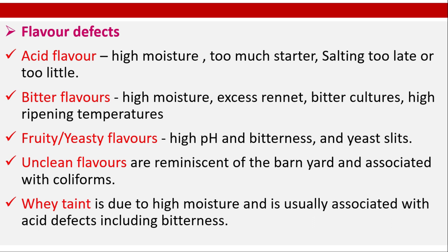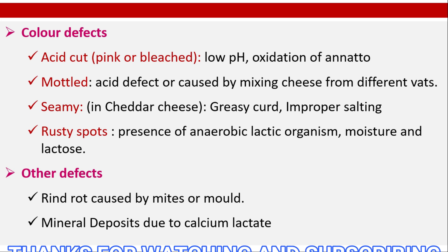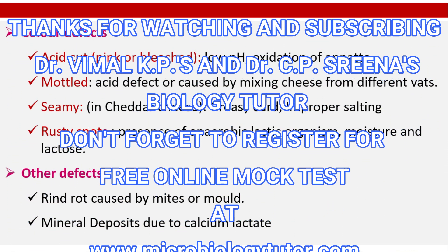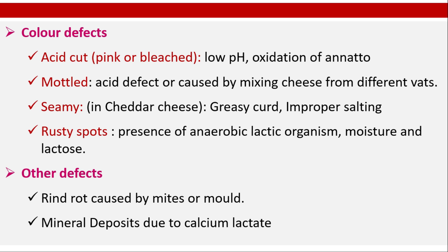Fruity or yeasty flavors due to high pH and bitterness; yeast slits also produce yeasty or fruity flavors. Unclean flavors are reminiscent of the barnyard and associated with coliforms. Wet taint is due to high moisture and is usually associated with acid defects including bitterness. Color defects: Pink or bleached due to low pH or oxidation of annatto. Seamy defect is usually seen in Cheddar cheese, caused by greasy curd or improper salting. Rusty spots indicate presence of anaerobic lactic microorganisms. Other defects: Rind rot caused by mites or mold; mineral deposits due to calcium lactate.